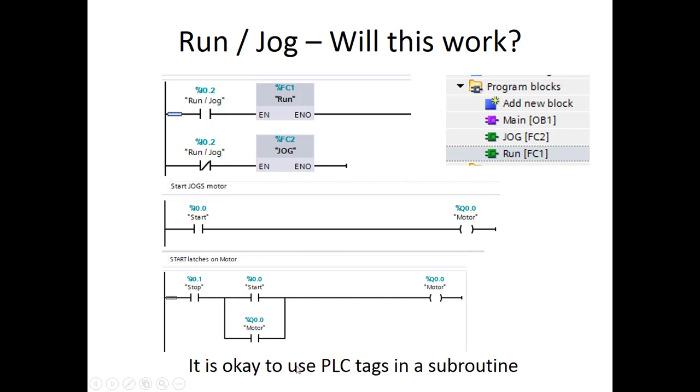It is okay to use PLC tags in a subroutine. When I look into this subroutine I see I've used the start, which has an address on it — that means it's a PLC tag. When I look into this subroutine I see the same start. These are the same tags. So if these both were scheduled, when you push start you'd see inputs coming on and the outputs responding accordingly. It's alright to use PLC tags in a subroutine.